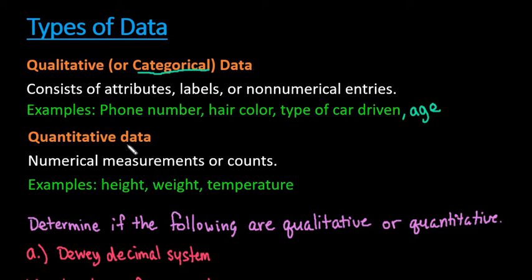If you think about it, quantitative sounds like quantity, so that would be measurements or counts. Qualitative sounds like qualities or categories for the categorical data, whichever one you like better.